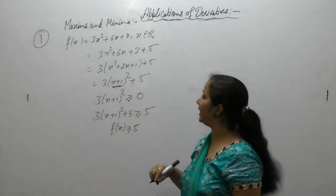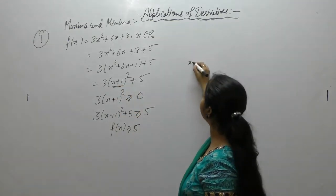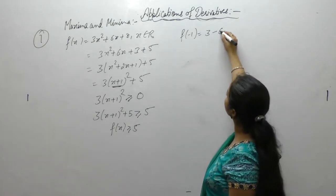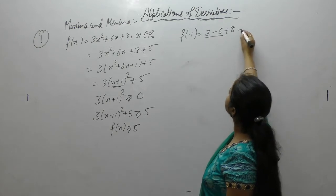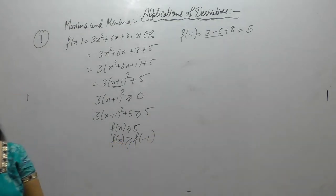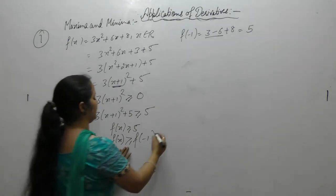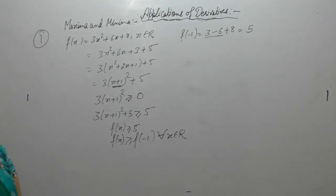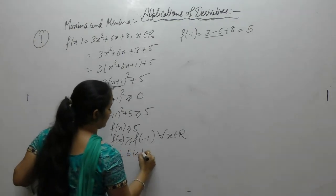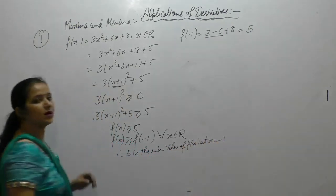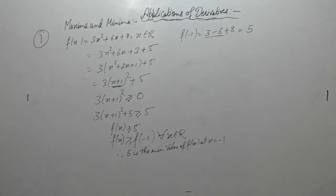If we set the derivative equal to zero, we get x equal to minus 1. The value of the function at x equal to minus 1 is: 3 into (minus 1) squared plus 6 into (minus 1) plus 8, which gives 3 minus 6 plus 8, that is 5. So f(x) is greater than or equal to f(minus 1) for all x belonging to real numbers. Therefore, 5 is the minimum value of the function at x equal to minus 1, and the maximum value does not exist.